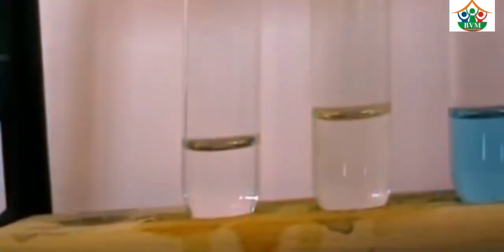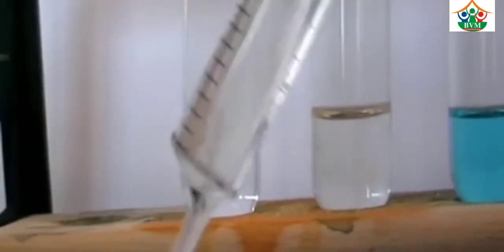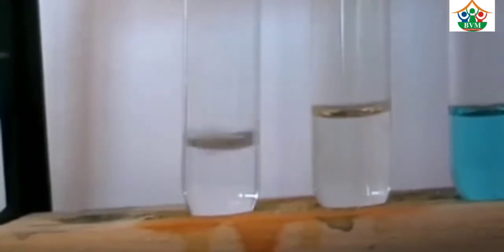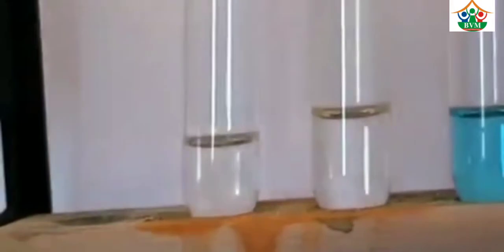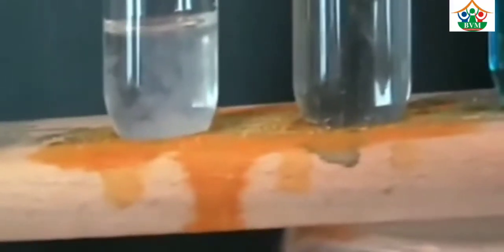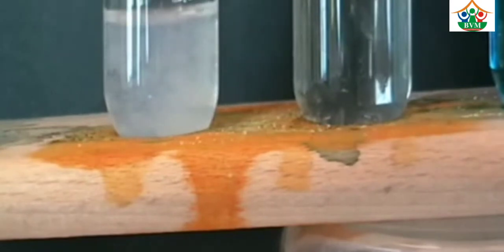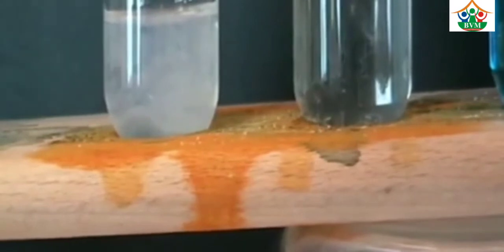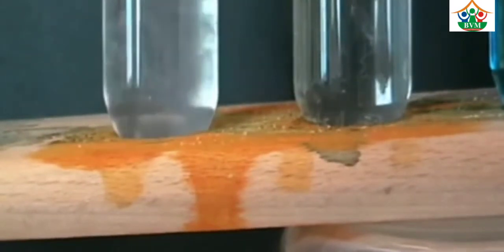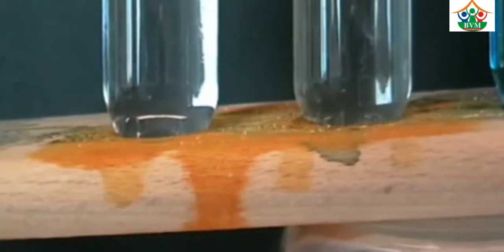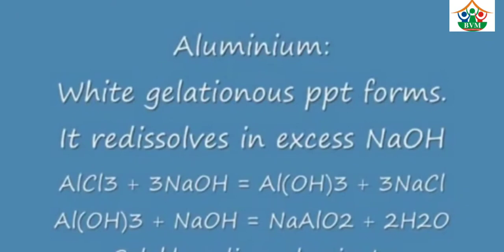When you put sodium hydroxide drops into a zinc cation solution, you will see a white color change. A white precipitate is formed. When you add an excess amount of sodium hydroxide, the white precipitate of zinc becomes soluble. This is the action of sodium hydroxide on zinc.